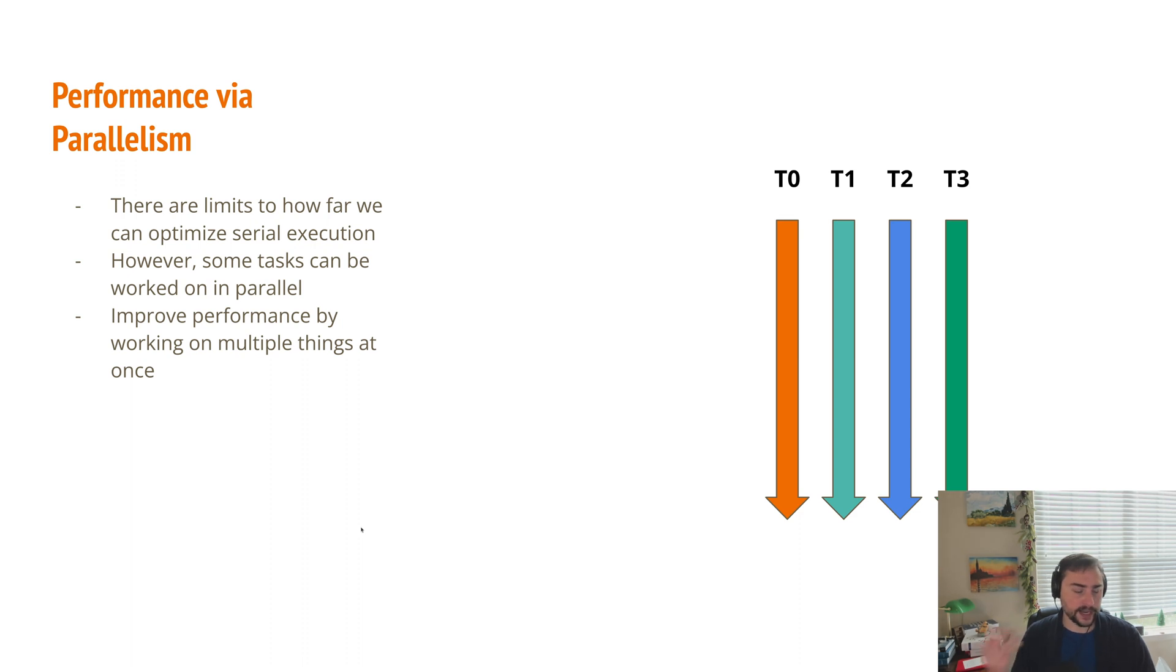So another idea that we have on the same train of thought on performance is performance via parallelism. There are limits to how far we can optimize serial execution, and this is something that CPU companies had to deal with in the early to mid-2000s. So it became very difficult to get performance by purely optimizing single-threaded execution. Performance via parallelism, so multiple threads and multiple cores, really started to become the primary way that we got performance starting in 2005-2006. We often have multiple tasks and we work on in parallel, and so we can improve performance by working on multiple things at once.